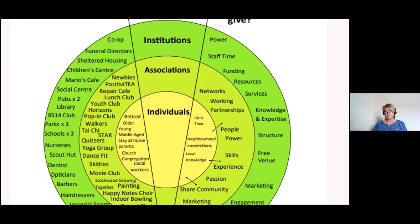The next circle is about associations. In your community you will inevitably have groups that have formed to do different things — groups you can approach. Again, they've got lots of gifts they can support any new initiative with. We have a group of newbies that meet in the library for anybody who moves to the area and can access information about what's going on — positivity, having tea, positive story sharing and things like that.